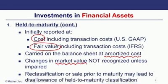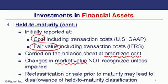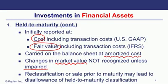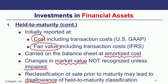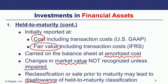Changes in market value are not reflected in the financial statements under held-to-maturity, except in the case of impairment — where fair value declines below amortized cost permanently, requiring a write-down. The company must have both intent and ability to hold to maturity. If securities are sold prior to maturity, the company may lose the right to use the held-to-maturity classification going forward. This is known as 'tainting' the held-to-maturity portfolio.